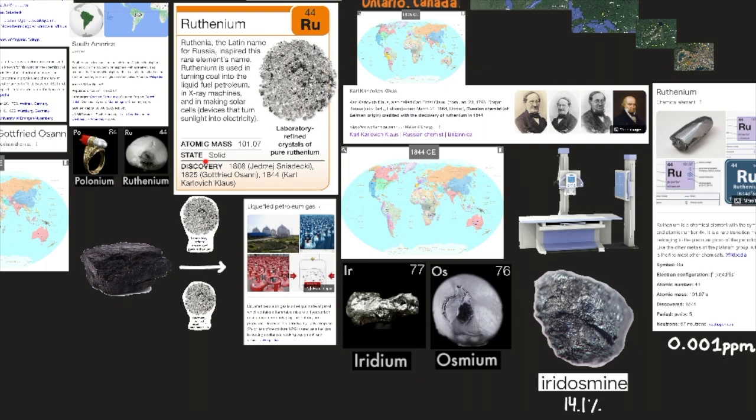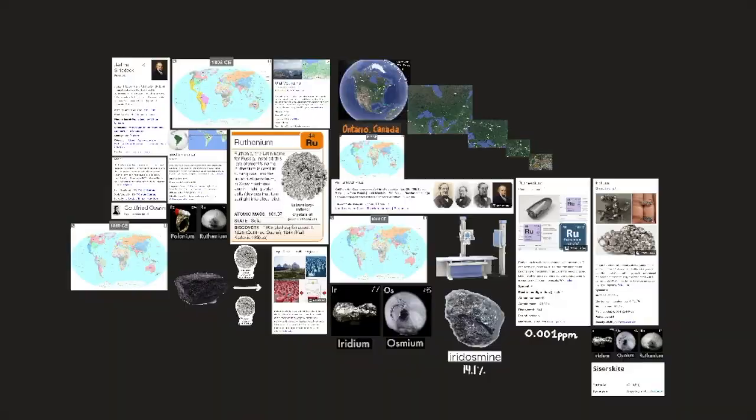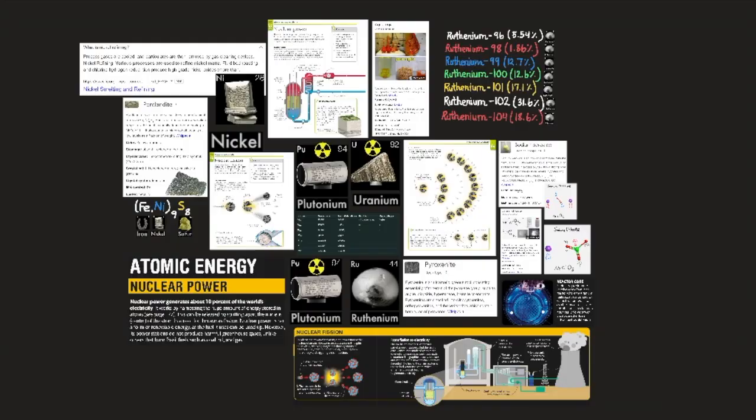Ruthenium's atomic mass is 101.07. Its state is a solid, and its discovery was in 1808 by Jędrzej Śniadecki, in 1825 by Gottfried Osann, and in 1844 by Karl Karlovich Klaus. These individuals discovered ruthenium individually, and they all came to the same conclusion of it being element number 44. Ruthenium is one of the rarest metals on Earth. It is found uncombined in nature. However, it is more commonly found associated with other platinum metals in the minerals pentlandite and pyroxenite. It is obtained commercially from the wastes of nickel refining. I made a full video for the element nickel.